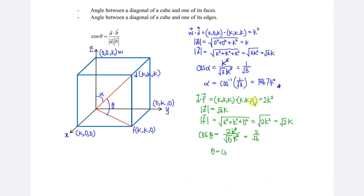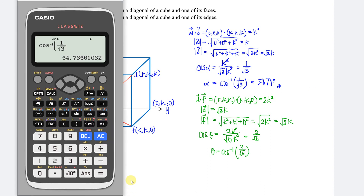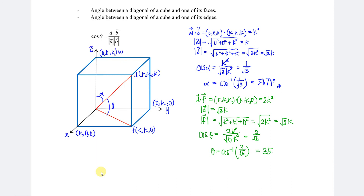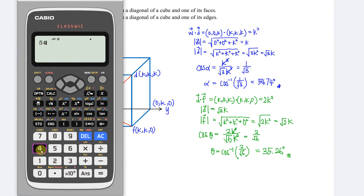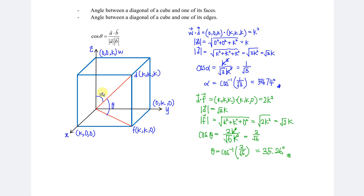From here we apply the inverse cosine function. So theta equals inverse cos of 2 over square root of 6, and we obtain 35.26 degrees. This is the angle between the diagonal and the face. Adding the two angles: 54.74 plus 35.26, we obtain 90 degrees. So the angle between the diagonal and the edge plus the angle between the diagonal and the face is always 90 degrees.